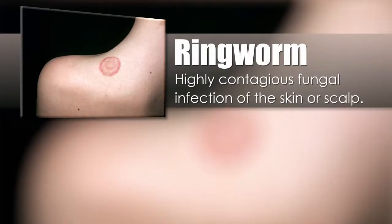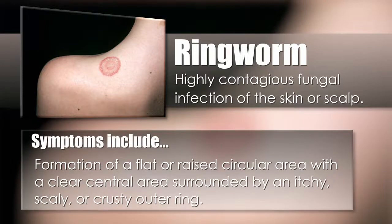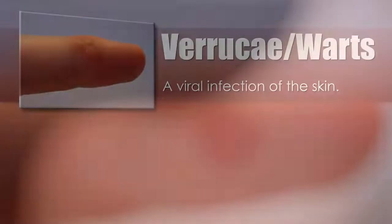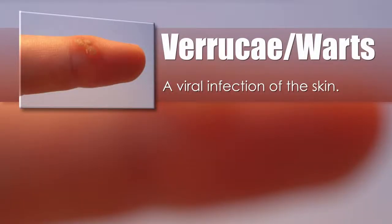Ringworm is a highly contagious fungal infection of the skin or scalp. Symptoms are the formation of a flat or raised circular area with a clear central area surrounded by an itchy, scaly, or crusty outer ring.